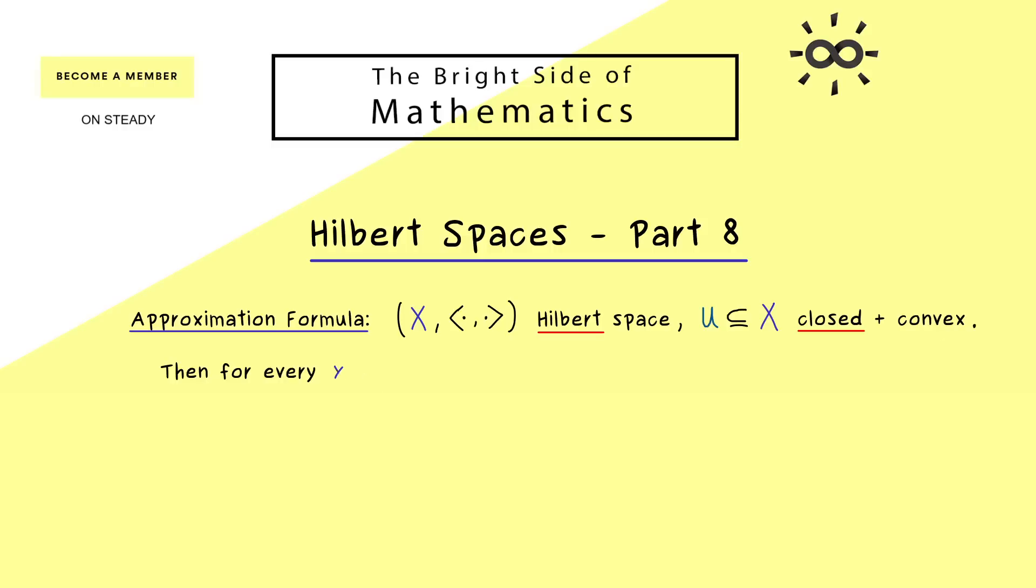So these are our two assumptions and then we get that for each x in our Hilbert space X there exists a unique best approximation inside our set U. And since it's unique we could call it x restricted to U. And the meaning of this best approximation is just that the distance between x and U is minimized. And here please note the distance we measure with respect to the norm which is induced by our inner product.